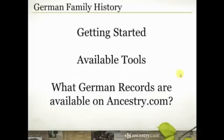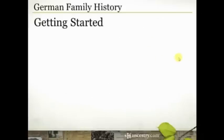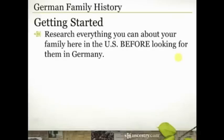We're going to cover a few things. We're going to talk about getting started for those of you who are just discovering that you have German ancestry or have just identified who that immigrant ancestor is. We're going to talk about some of the tools available online, not necessarily just at Ancestry.com, but some of the other tools that you might need to be successful at German research. And then we'll talk specifically about what German records are available on Ancestry.com. One of the things that you need to do — and I've said this before when we've talked about immigration research of any kind — is that you need to research everything you can about your family here in the U.S. before you go looking for them overseas.